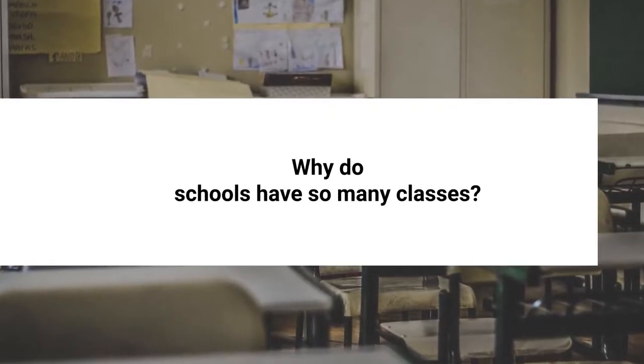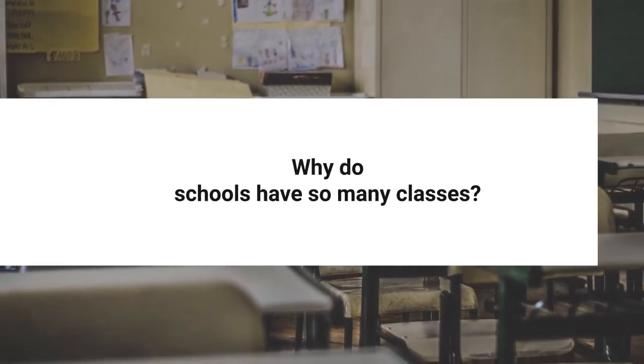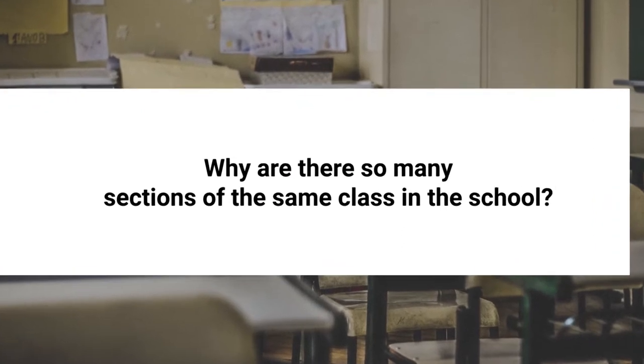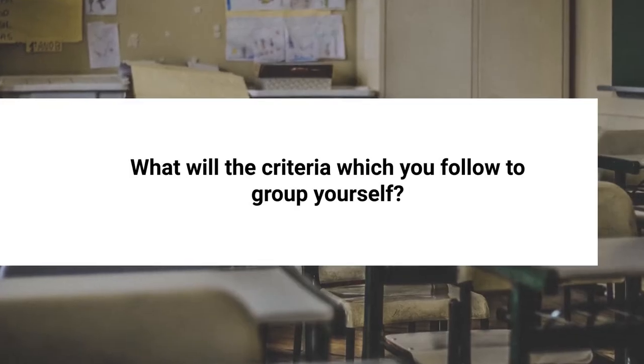You can start with an activity by asking a few questions to your students: Why do schools have so many classes? Why are not all students studying in the same class? Why are there so many sections of the same class? How does a teacher or school decide which student should be placed in which class or section? When you organize events with clubs or group activities, how do you distribute students into different groups, and what criteria would you follow to make small groups?